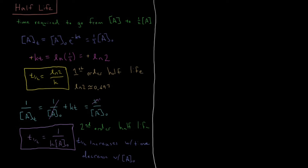Lastly, for good measure, let's look at zero-order reactions. We haven't looked at the zero-order integrated rate law, but it's pretty simple to work with. The rate V(T) equals K, because there's zero-order rate dependence — there's no dependence on the concentrations of any reactants. So the reaction rate is just constant; it's whatever your rate constant is.